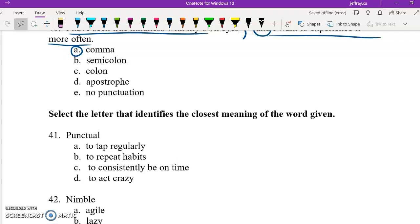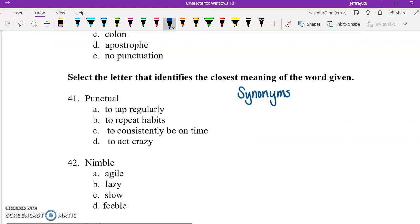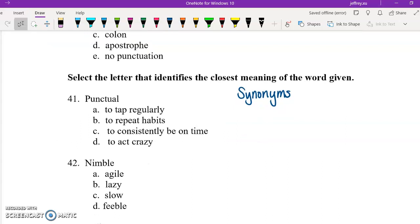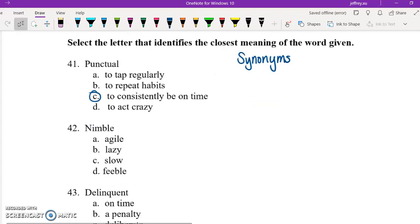Okay, next section asks us to identify words that have similar meanings to the words given. So another word for this is synonyms. You want to find synonyms of the words that are provided. 41, punctual. If you're punctual, you're on time. So C is the correct answer.